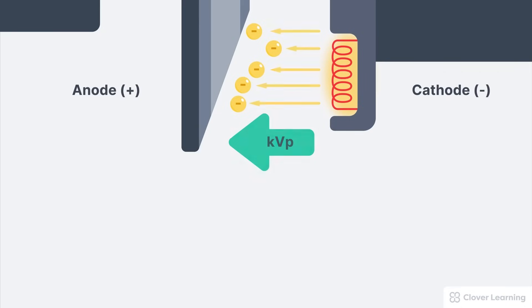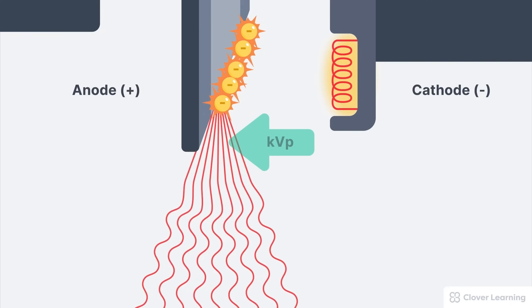The last step in X-ray production is decelerating the electrons. These highly energetic electrons slam into the anode of the X-ray tube. In the process of decelerating, they release their energy as heat and, more importantly, as X-rays.